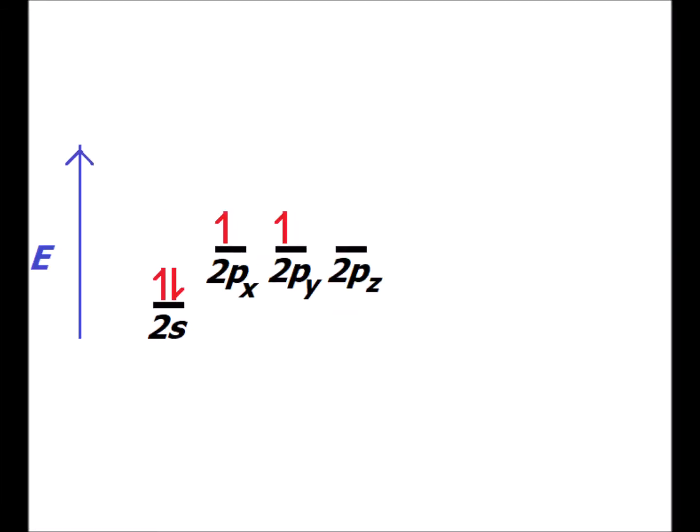Here we have the ground state electron configuration for carbon in the valence shell. This poses a problem for valence bond theory in that since carbon has two half-filled orbitals, the 2px and the 2py, it seems that carbon should only be able to make two bonds. So we seek a rationale for why carbon tends to form four bonds and not two.